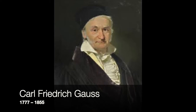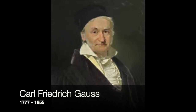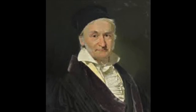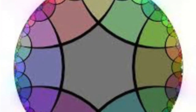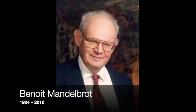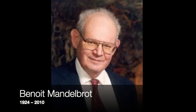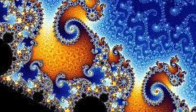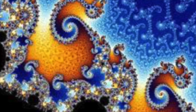Carl Friedrich Gauss developed non-Euclidean geometry, which generally refers to any geometry not based on the postulates of Euclid, including geometries where the parallel postulate is not satisfied. Non-Euclidean geometry provides the mathematical foundation for Einstein's theory of relativity. Benoit Mandelbrot developed and popularized fractal geometry. A fractal is a self-similar shape with fractional dimensions that is highly sensitive to initial conditions — a small change to the initial condition can lead to dramatically different outputs.